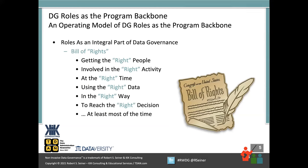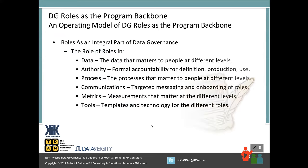In my webinar series and in many presentations I give, I talk about the data governance bill of rights. Instead of rights of the people, it's the word 'right' within quotes — getting the right people involved in the right activity at the right time using the right data. What is the definition of 'right' within your organization? The very beginning of the data governance bill of rights focuses on the people and the role they play, and what activity they get involved in. This cements the idea that the operating model of roles and responsibilities is really the backbone of your data governance program.